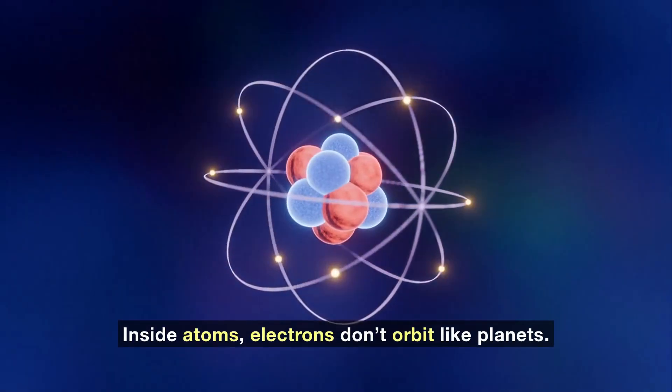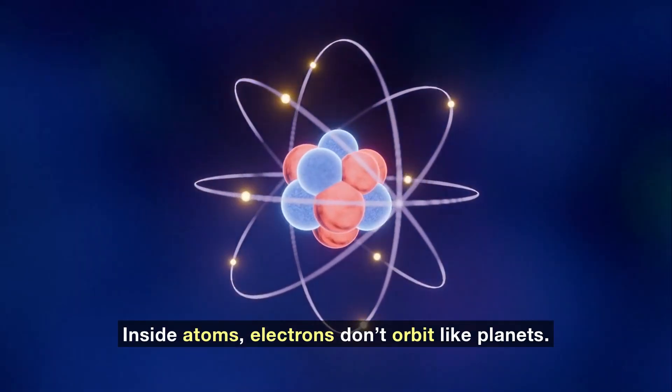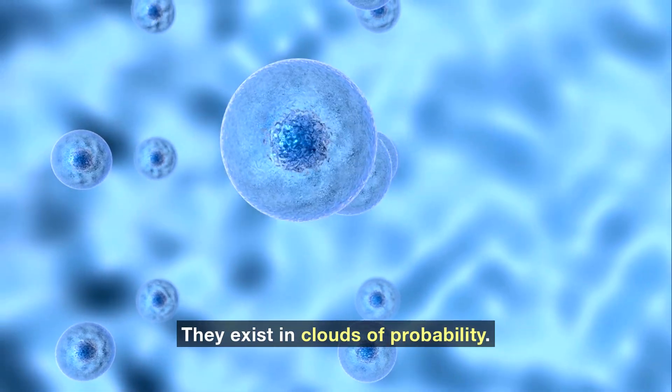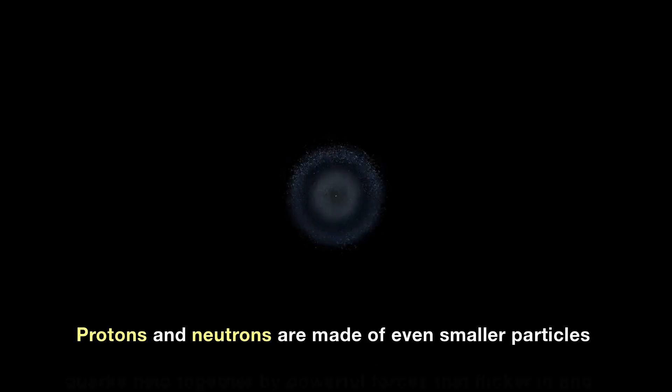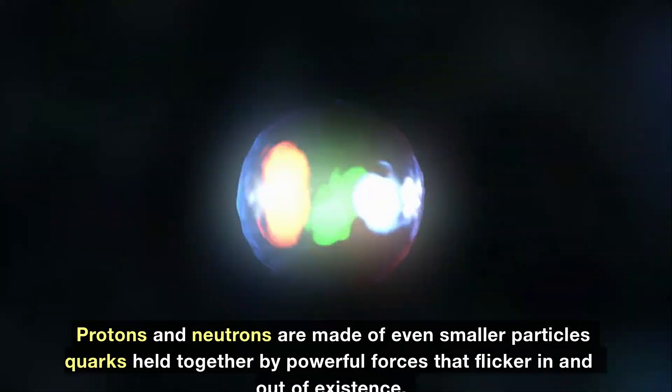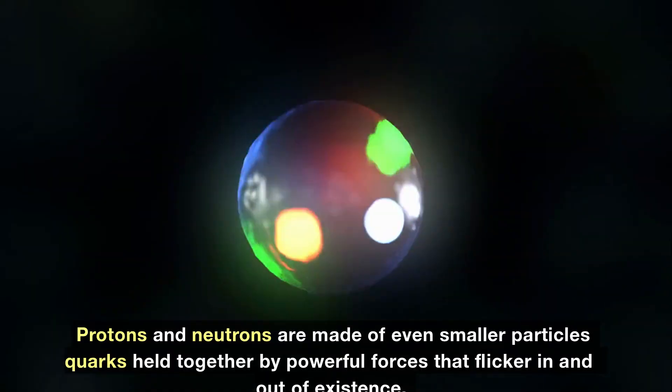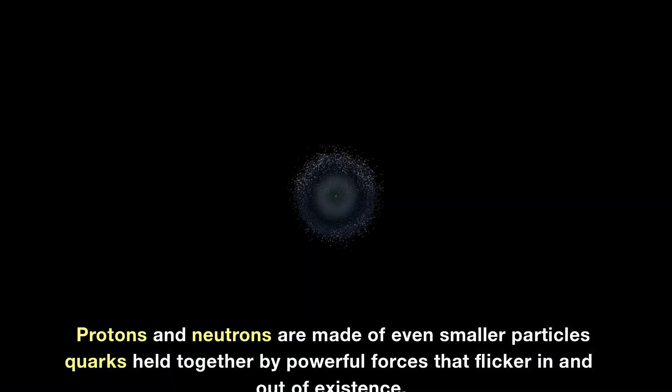Inside atoms, electrons don't orbit like planets. They exist in clouds of probability. Protons and neutrons are made of even smaller particles, quarks held together by powerful forces that flicker in and out of existence.